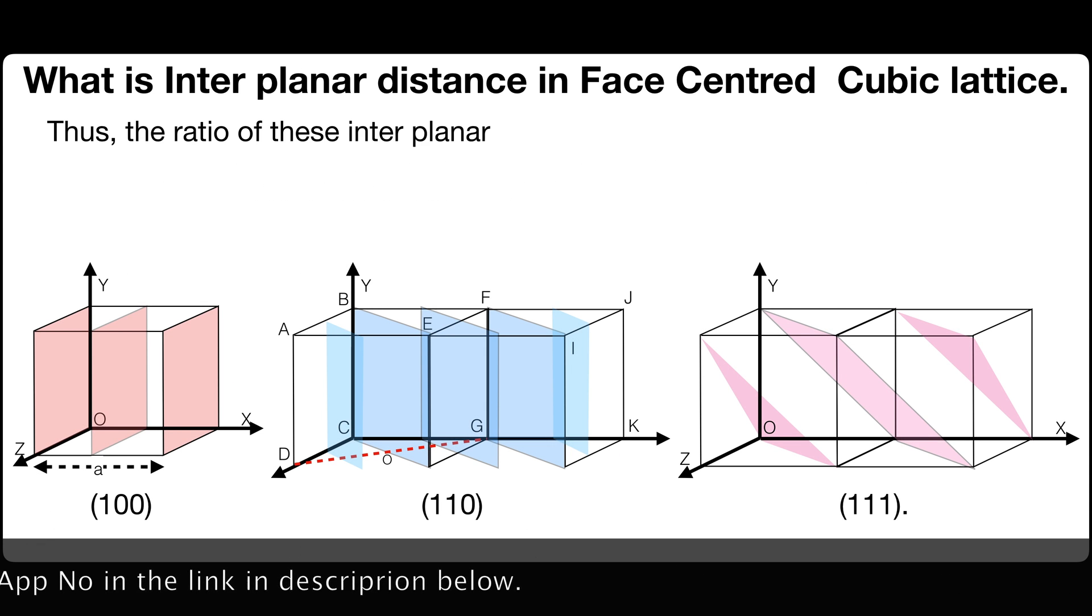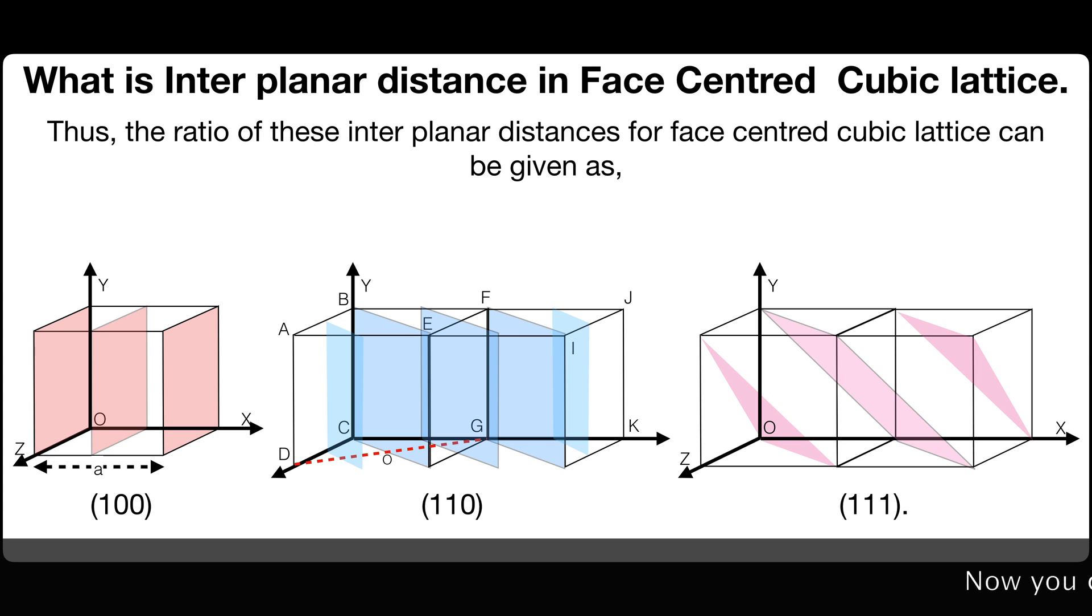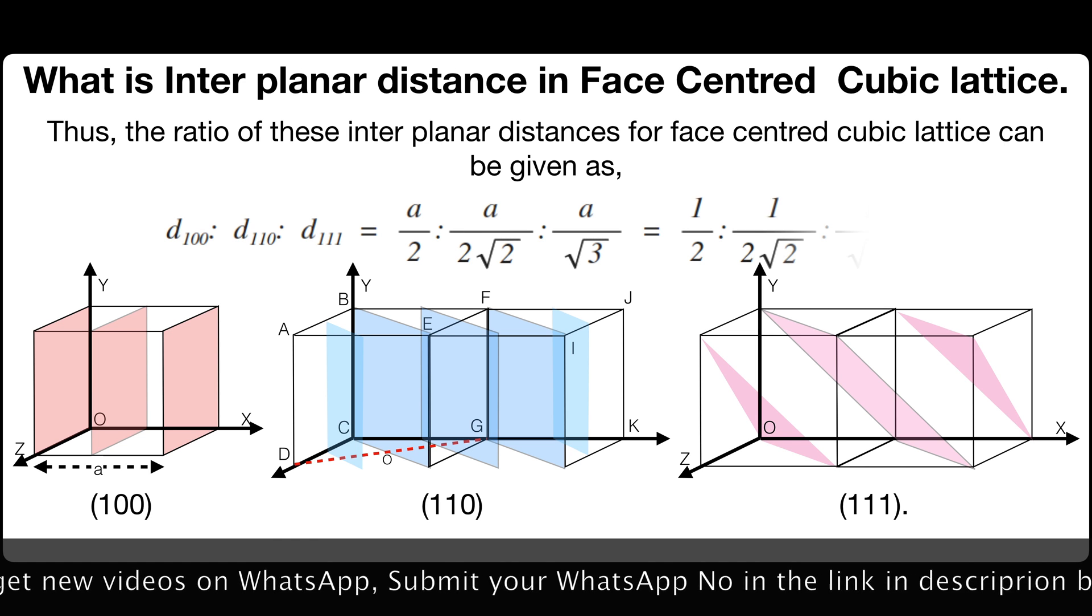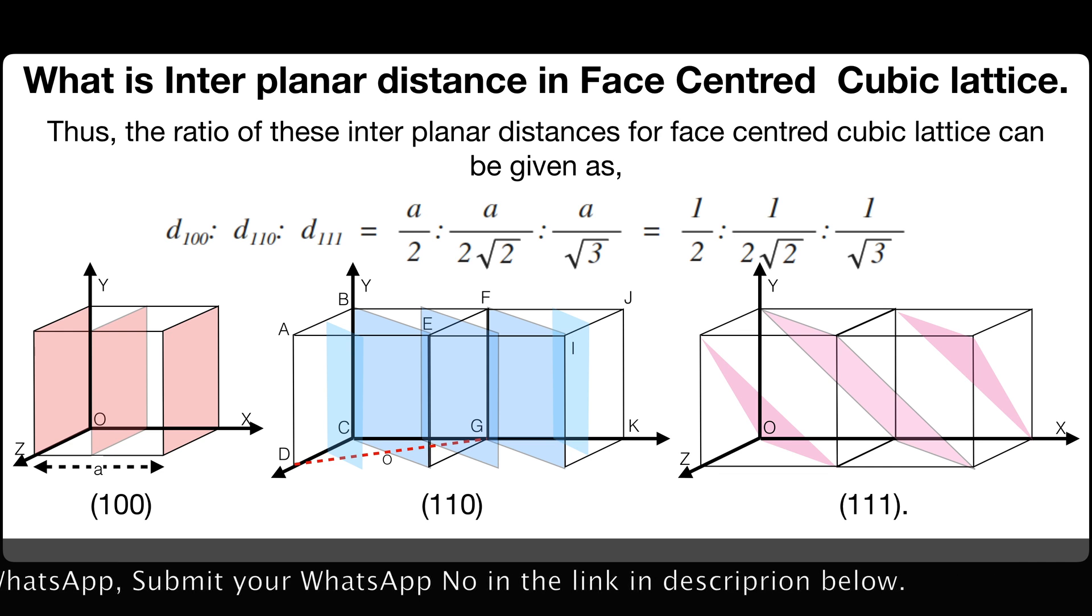Thus the ratio of these interplanar distances for face centered cubic lattice can be given as d100 to d110 to d111 equals a by 2 to a by 2 square root of 2 to a by square root of 3.